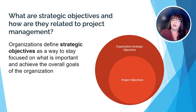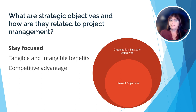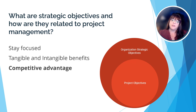So what are strategic objectives and how are they related to project management? Organizations define strategic objectives as a way to stay focused on what is important and achieve the overall goals of the organization. Every project should have its objectives directly tied back to a strategic objective of the organization — pursuing a project that will not move organizational objectives forward is a waste of resources. Projects help make sure the organization is focused on improving and meeting its goals. Projects often deliver tangible benefits such as a new computer system, but could also provide intangible benefits such as employee satisfaction or customer satisfaction. Creating projects tied to strategic objectives can also create a competitive advantage, enabling the organization to provide a better product or service than their competitors.